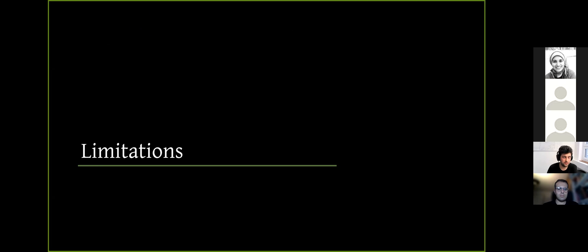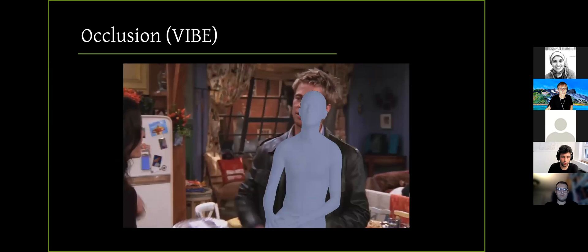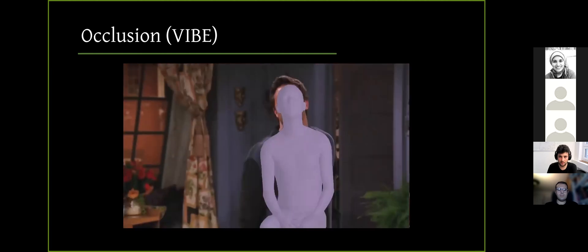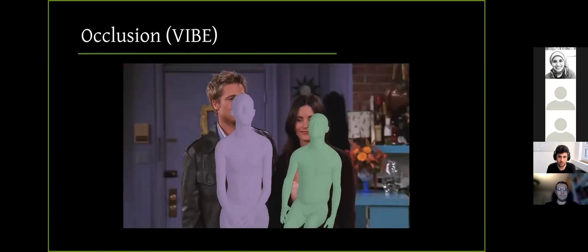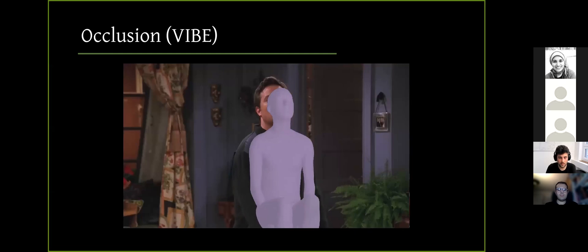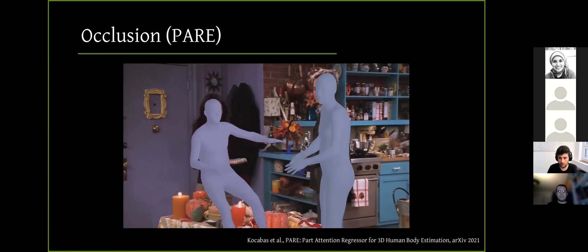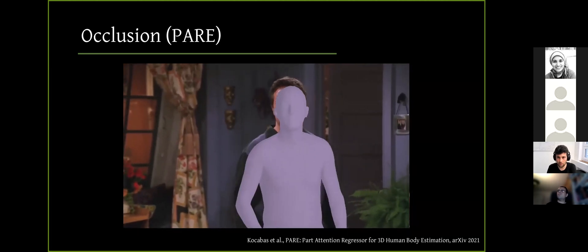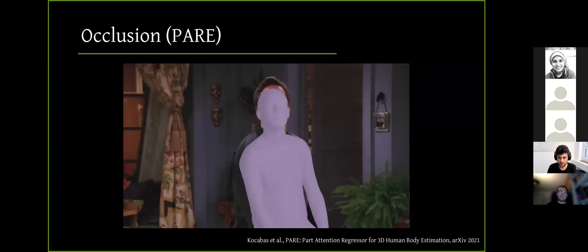And so in this part, I would like to mention some of the limitations and some of the follow-up works that tackle these limitations. So occlusion is one big problem. Here you see the result of VIBE on a short video featuring different kinds of occlusion, such as frame occlusion, scene occlusion, and multi-person occlusion. And as you can see, VIBE doesn't do a good job in these cases. It produces some unstable results. In a follow-up work called PARE, we tackle this problem of occlusion. And here you see the result on the same video. As you can see, it is more stable and better at producing more plausible results in case of occlusion. And you can refer to our arXiv paper for more details.